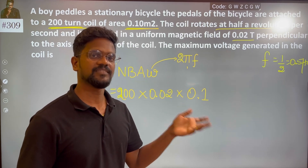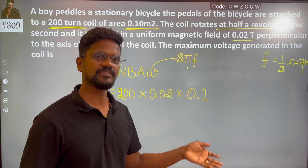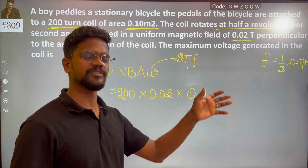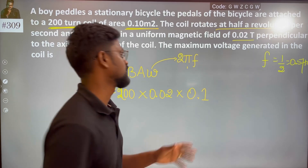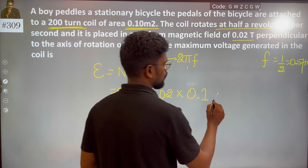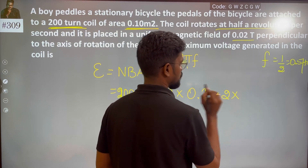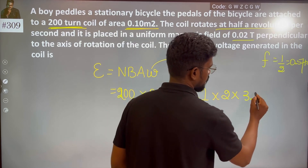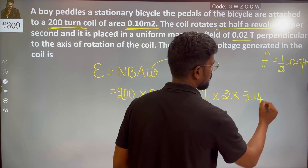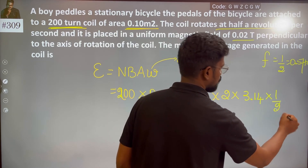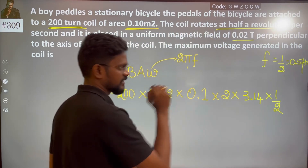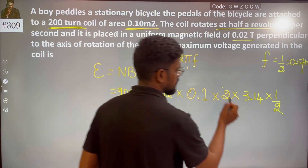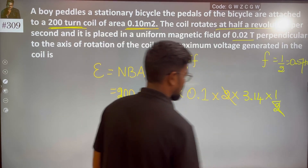2π is a constant. F is the frequency, which is 0.5 Hz. So 2 into π gives approximately 3.14, divided by the period of 1.2, giving 0.5.